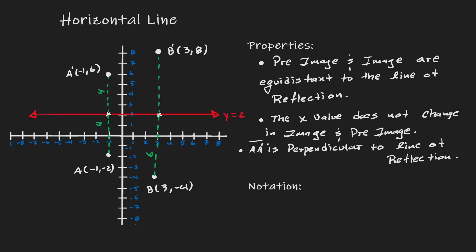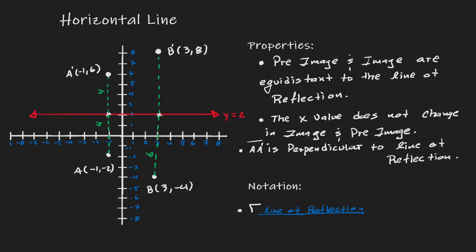What notation do we use when reflecting over a line? We always use a lowercase r, and as a subscript we write the line of reflection. Since we were reflecting over the line y equals 2, the notation for this reflection is r with a subscript of y equals 2.